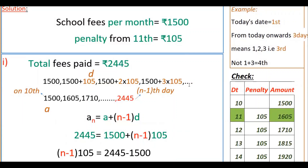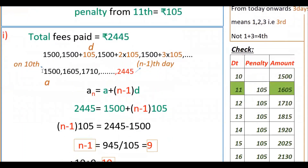This sequence is in AP because the common difference D is constant at 105 rupees. So 1500, 1605, 1710, and so on. The final amount is 2445 rupees. Note that 1500 is the amount on the 10th day, and the penalty starts from the 11th day — we are including the 10th day as our starting term.